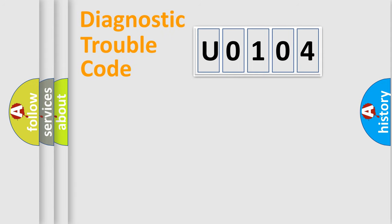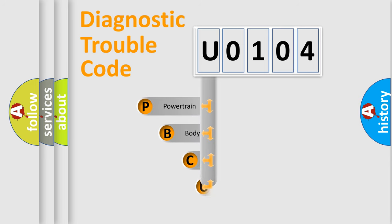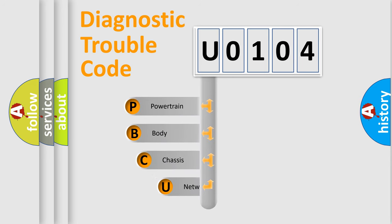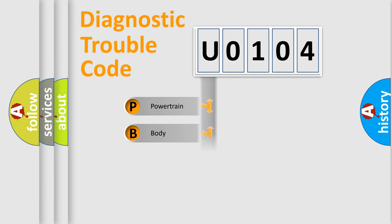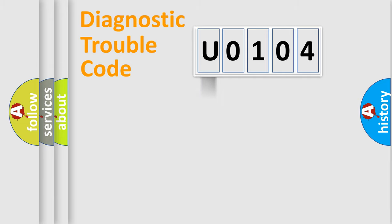Let's do this. First, let's look at the history of diagnostic fault code composition according to the OBD2 protocol, which is unified for all automakers since 2000. We divide the electric system of the automobile into four basic units: Powertrain, Body, Chassis, and Network.